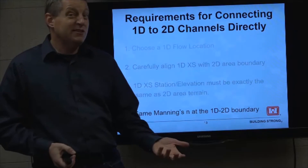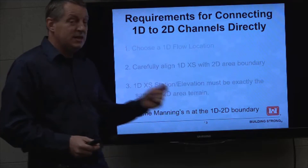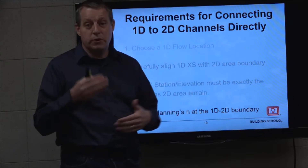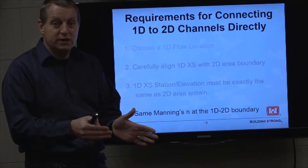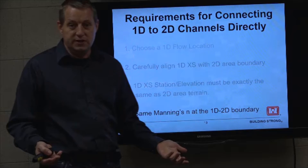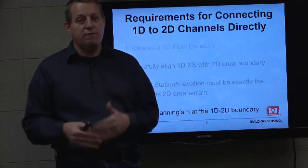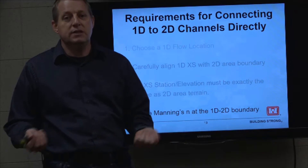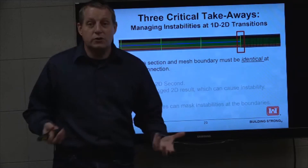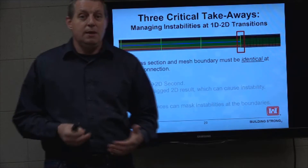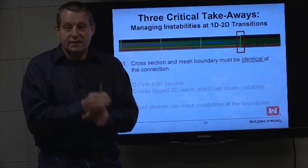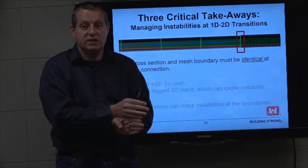There's one other thing to account for. The station elevation data could be the same — same cross-section geometry for your 2D boundary and 1D cross-section — but the hydraulics could still have a discontinuity if you don't have the same roughness. You must ensure the roughness is also identical so the hydraulics at that boundary are consistent.